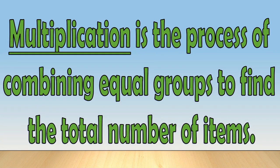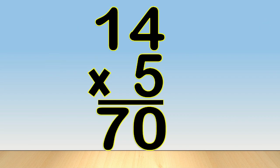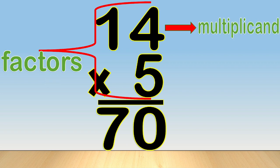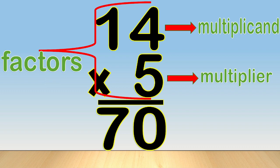Multiplication is the process of combining equal groups to find the total number of items. Let's look at the number sentence: fourteen times five equals seventy. The numbers that are multiplied are called factors. Normally, the bigger number is written on top and it's called the multiplicand. Below, we have the smaller number, which is called the multiplier. And the answer is called the product.